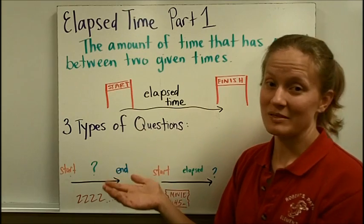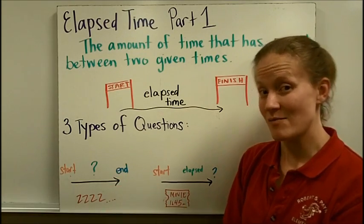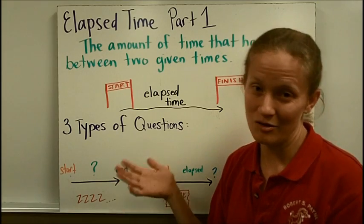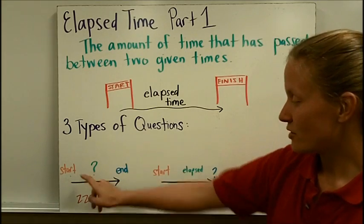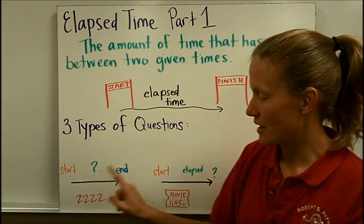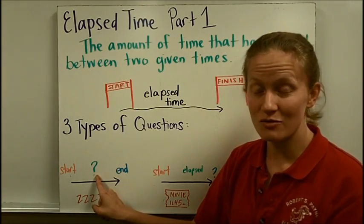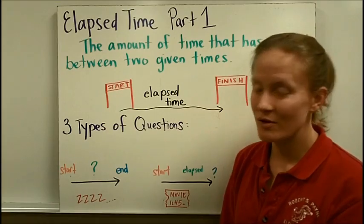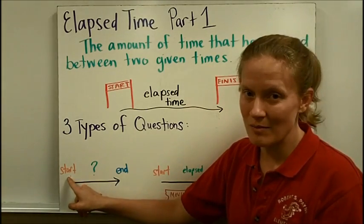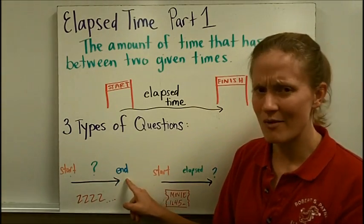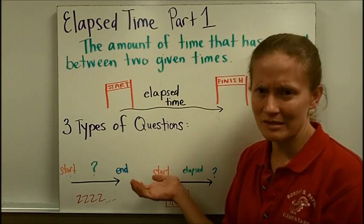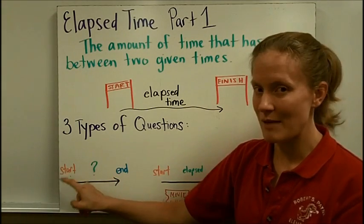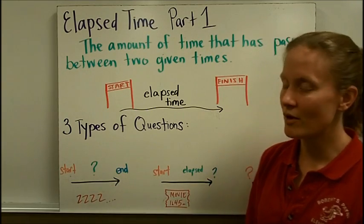When we are working with elapsed time in real life and in the math classroom, there are generally three types of questions you might come across. First, you might be given a start time and an end time and try to figure out the amount of time that has elapsed. For example, if you fall asleep at a certain time and wake up at a certain time, you might wonder how many hours did I sleep? You would be finding out the amount of time that has elapsed between when you fell asleep and when you woke up.